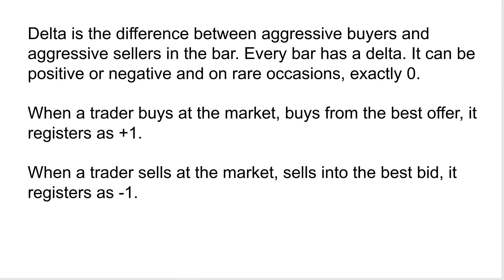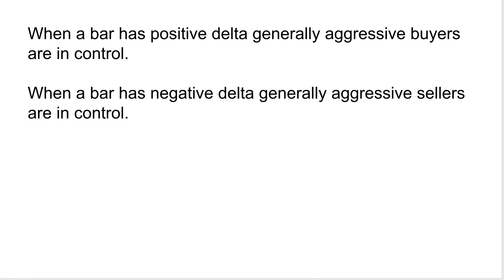If you're new to OrderFlow, Delta is basically the difference between aggressive buyers and aggressive sellers in a bar. Every bar has a Delta — it could be positive or negative, and on rare occasions it's zero, though that's just coincidence. When a trader buys at the market — buying the best offer — it registers as plus one in the Delta. When a trader sells at the market into the best bid, it registers as minus one. When a bar has positive Delta, generally aggressive buyers are in control. When a bar has negative Delta, generally aggressive sellers are in control. I say generally because that's not always the case. Also note: this Delta is different from Delta as applied to options — it's a way to measure aggressive activity in a bar.